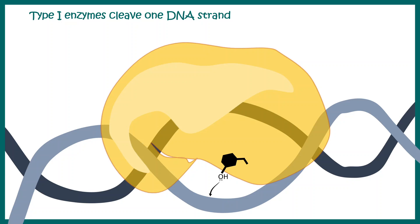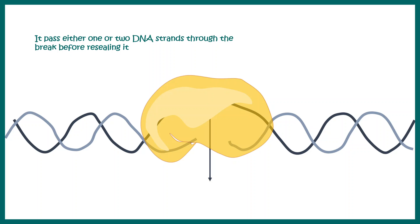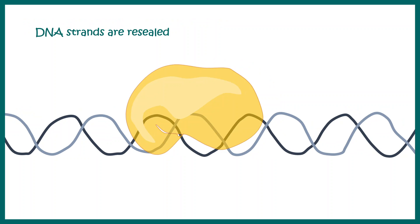Type 1 topoisomerase uses a tyrosine moiety as a nucleophile. This nucleophile attacks the DNA backbone, creating a transient enzyme-DNA adduct and freeing up the 3' hydroxyl group. Then one strand — look at the dark strand — is swivelled and passed through the other broken strand. The initial position of the strand is marked by the dotted line and the final position by the solid lines. The light-colored strand is then sealed by the topoisomerase enzyme, relieving the extra torsion and resolving the supercoiling problem.